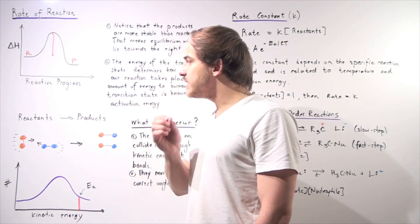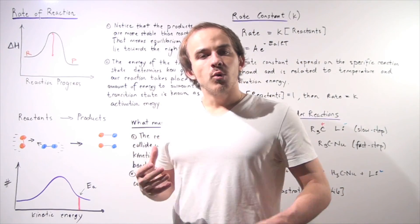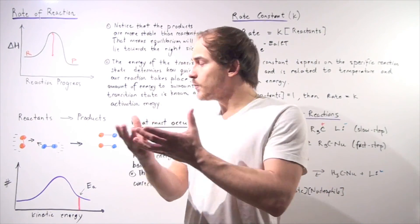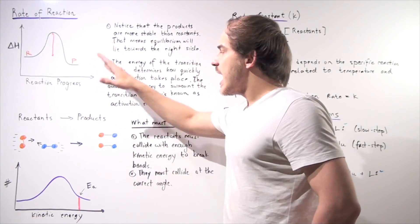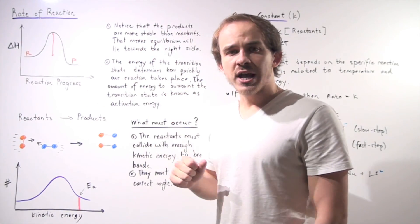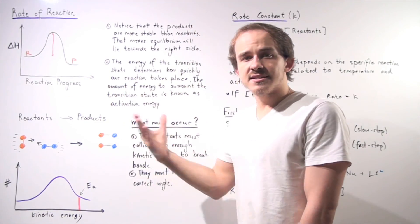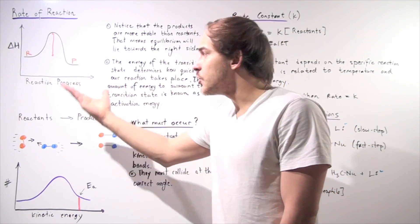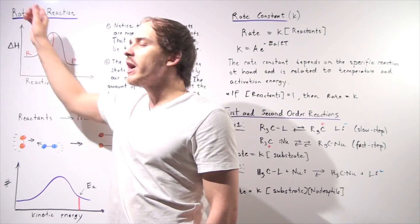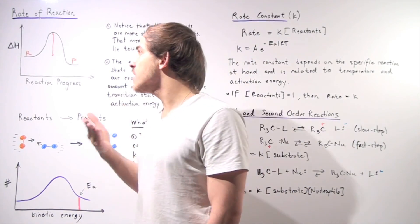Let's begin by looking at the following reaction. Let's suppose we have some reactants reacting a certain way to produce our products. This is our energy diagram for our reaction taking place. The x-axis is our reaction progress, and the y-axis is our change in H, change in enthalpy.